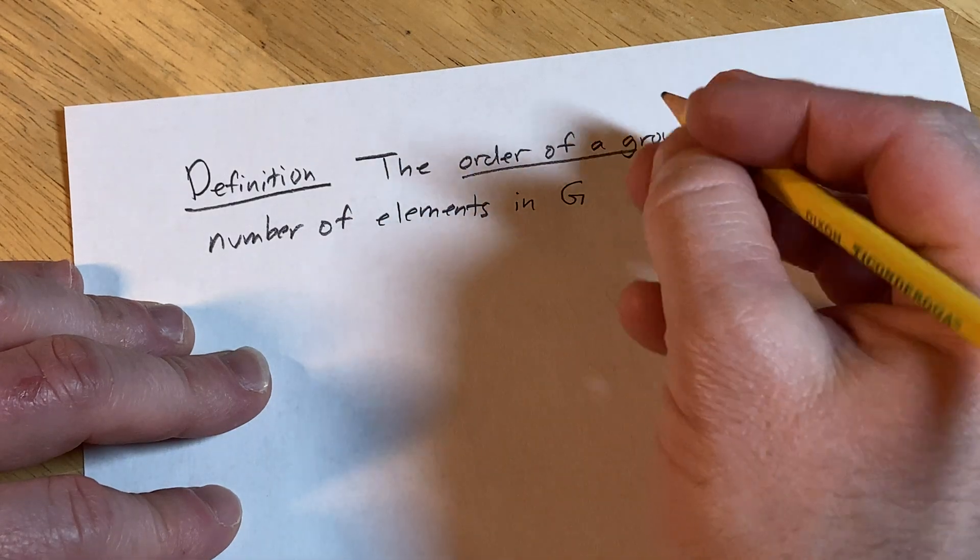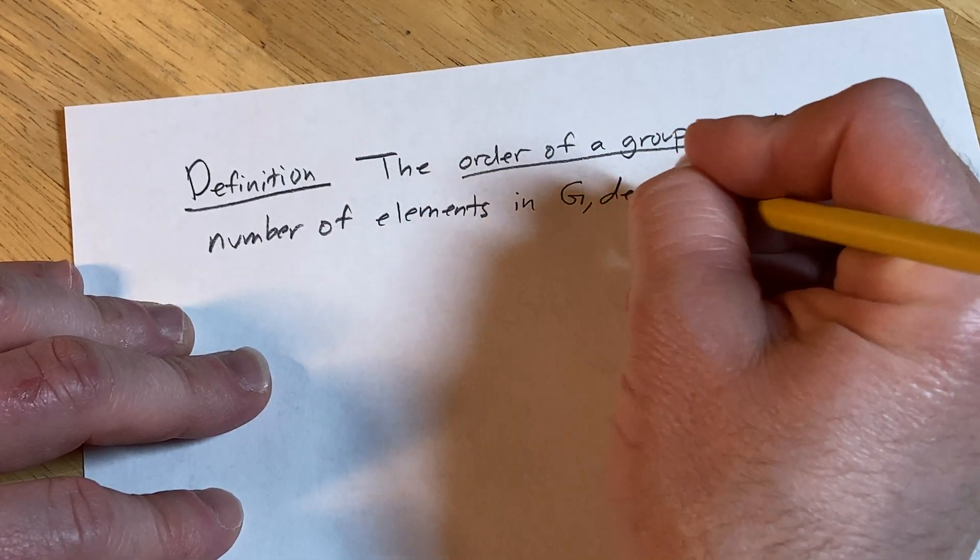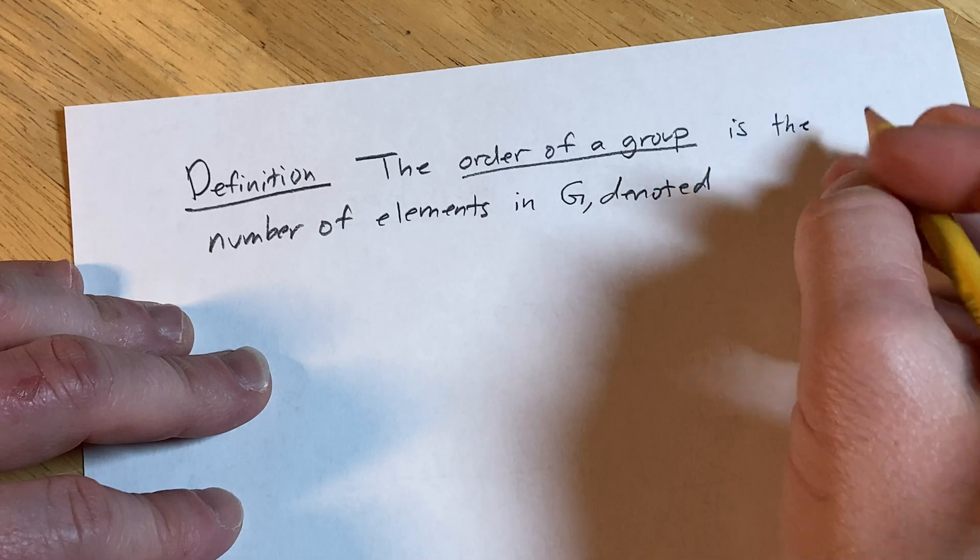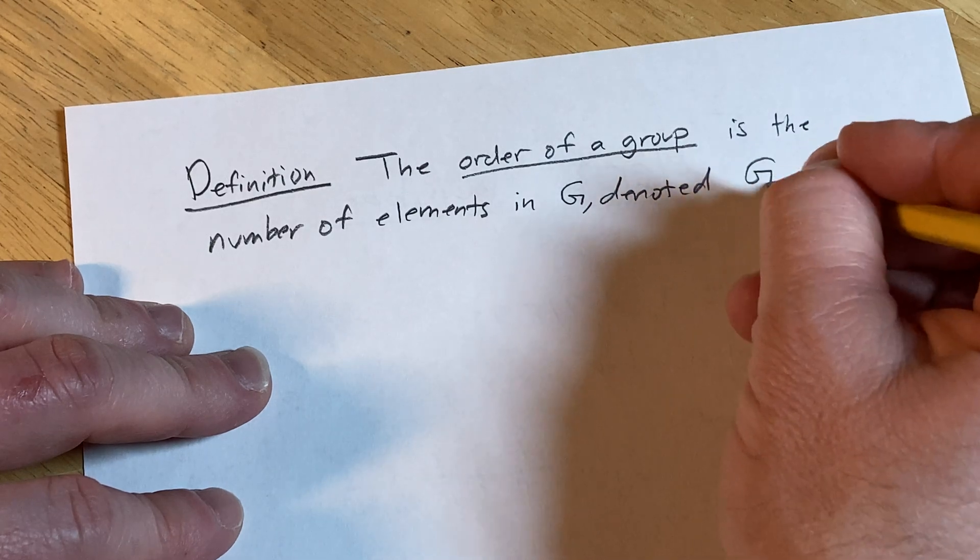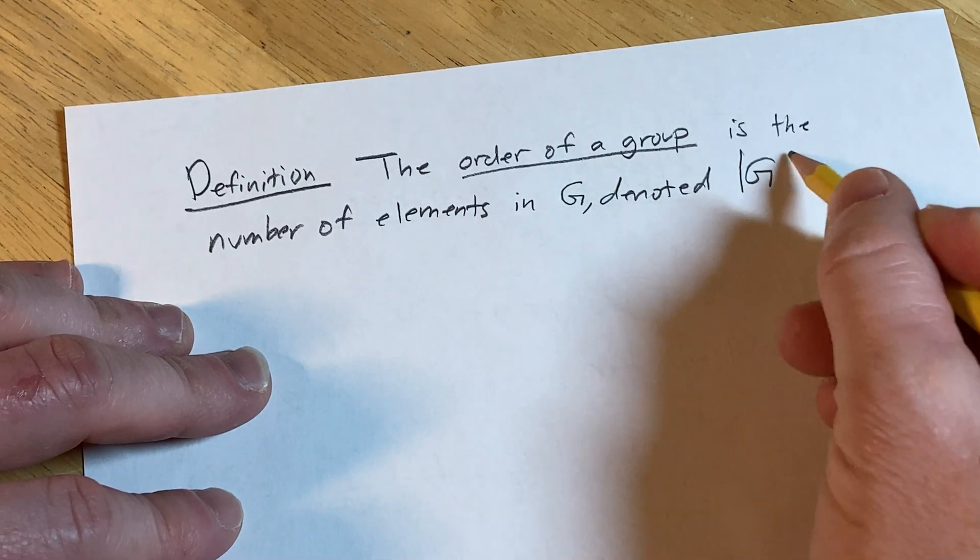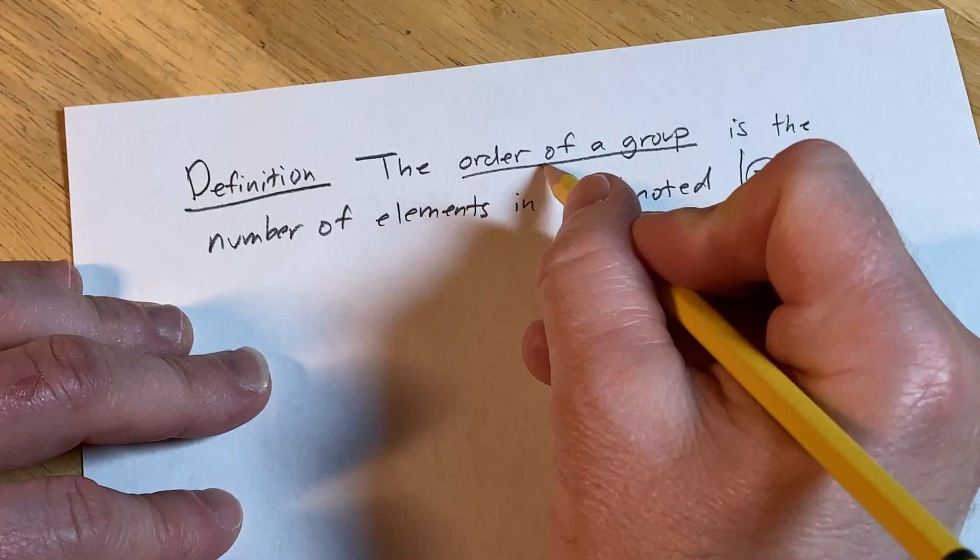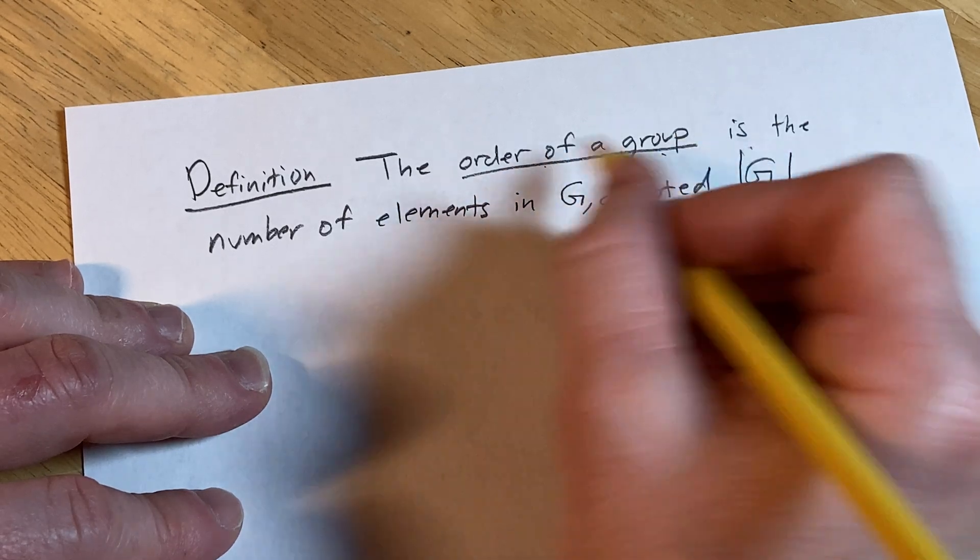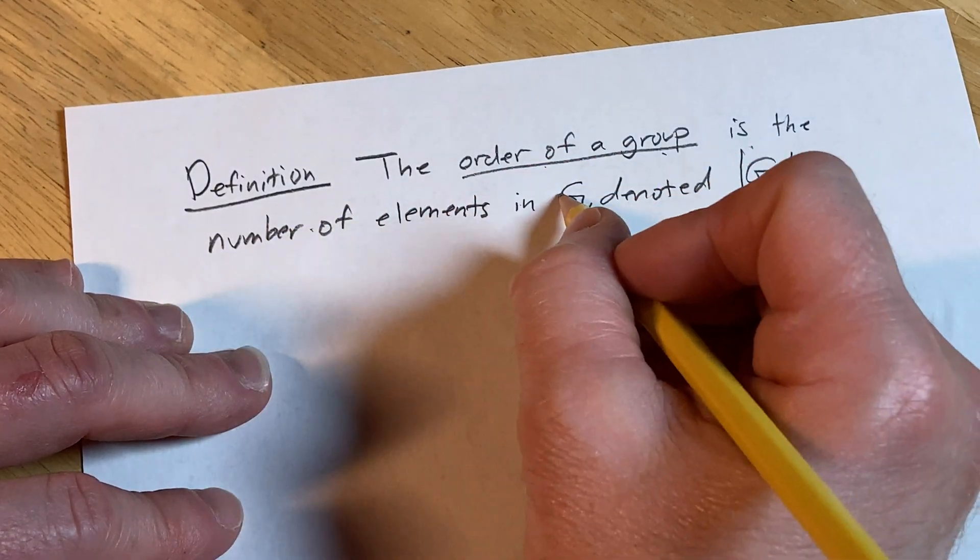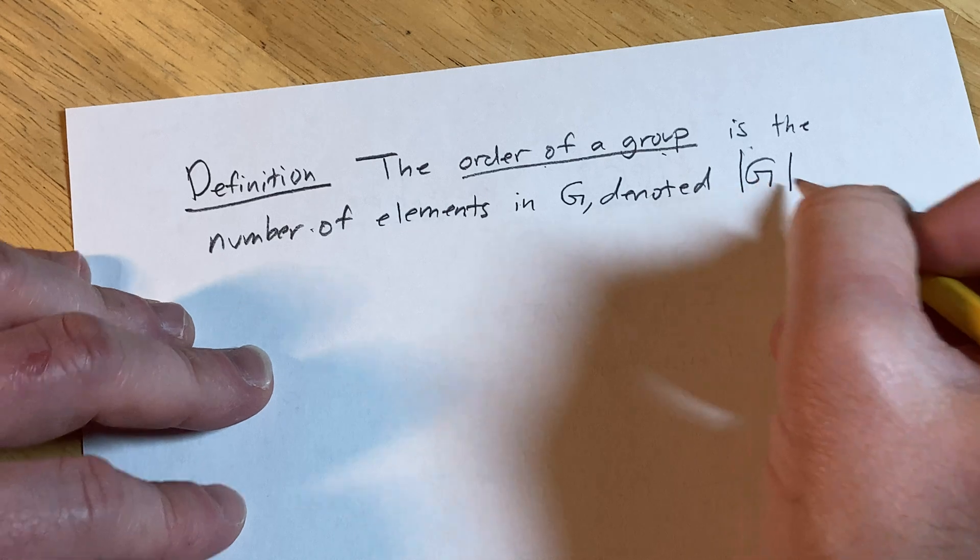And the notation we use, denoted, is G with bars around the G. So, the order of a group is the number of elements in G and is denoted by this G with this bar.